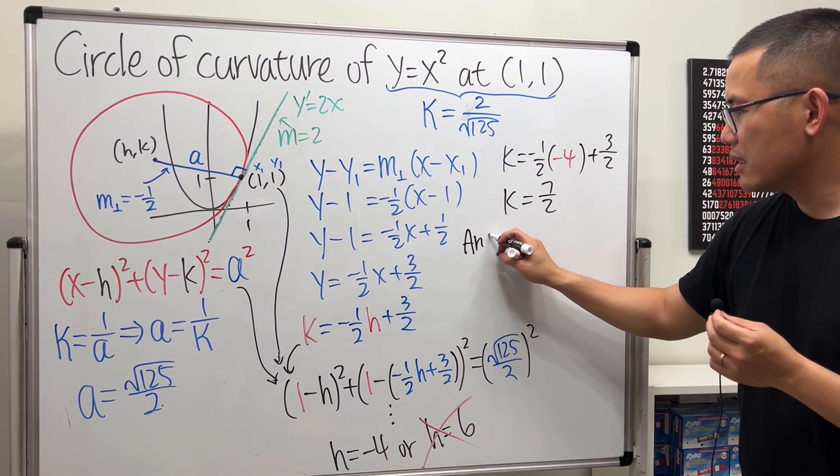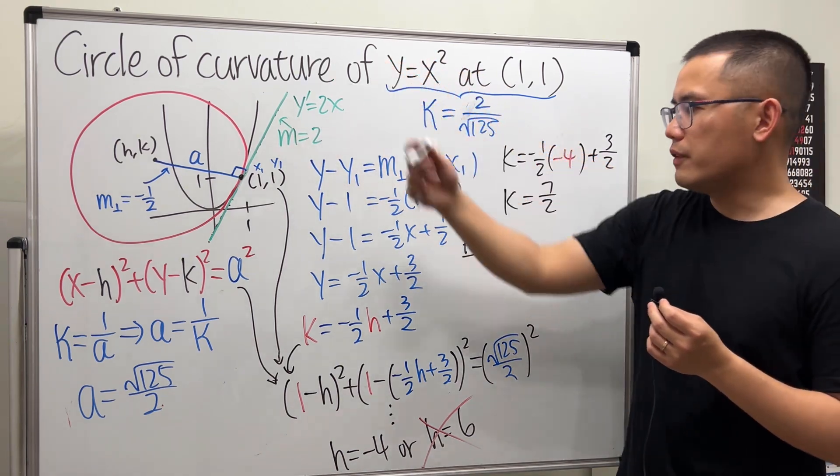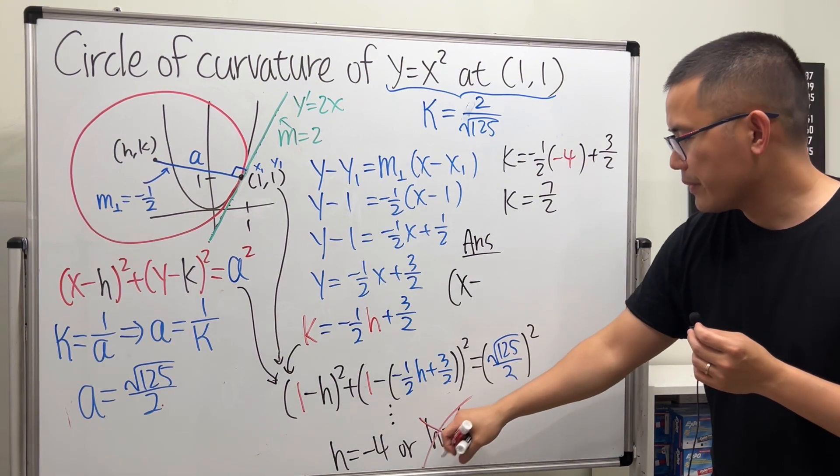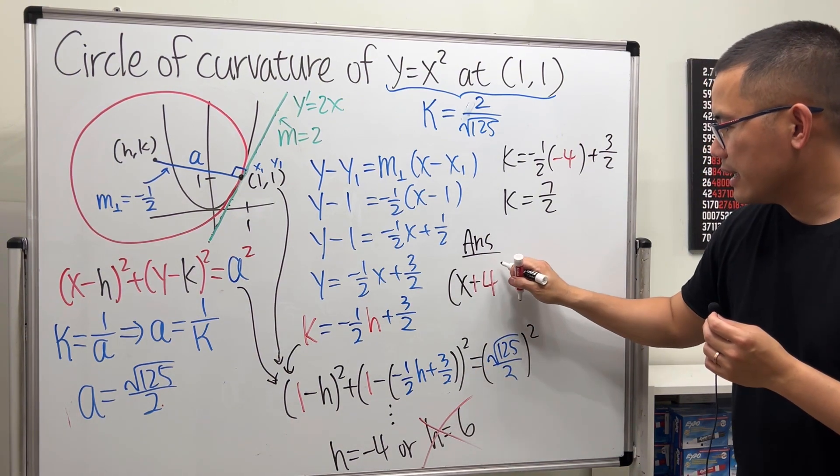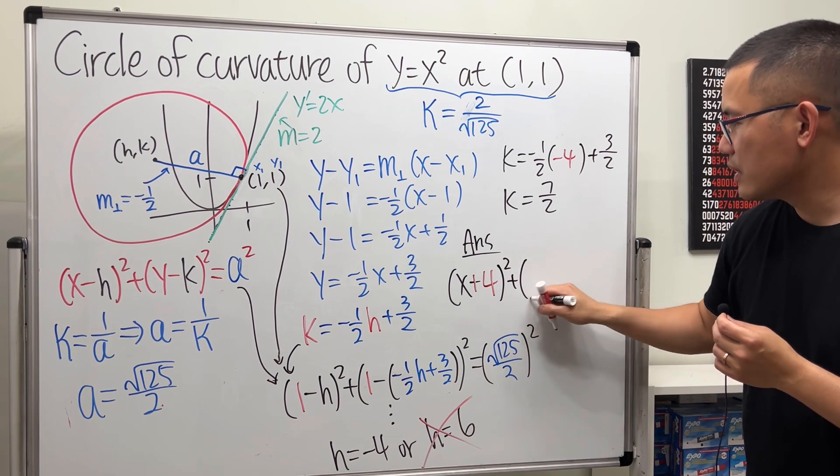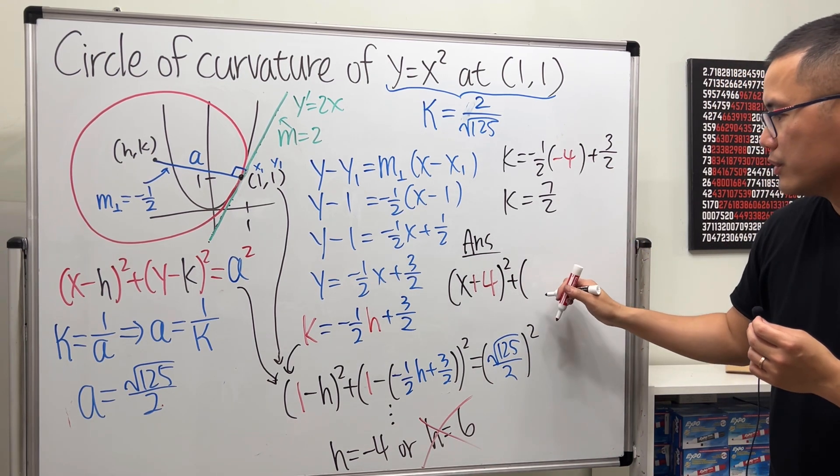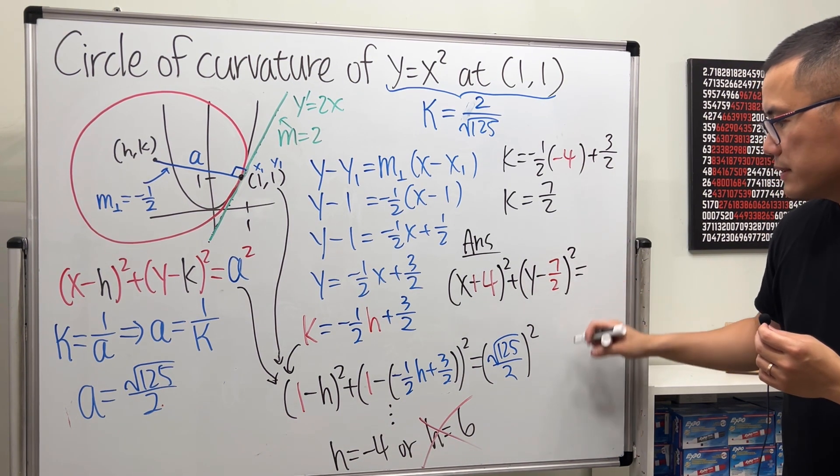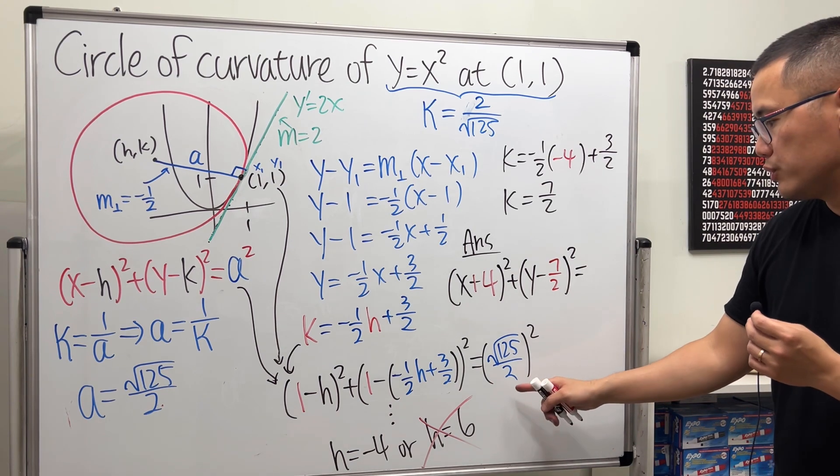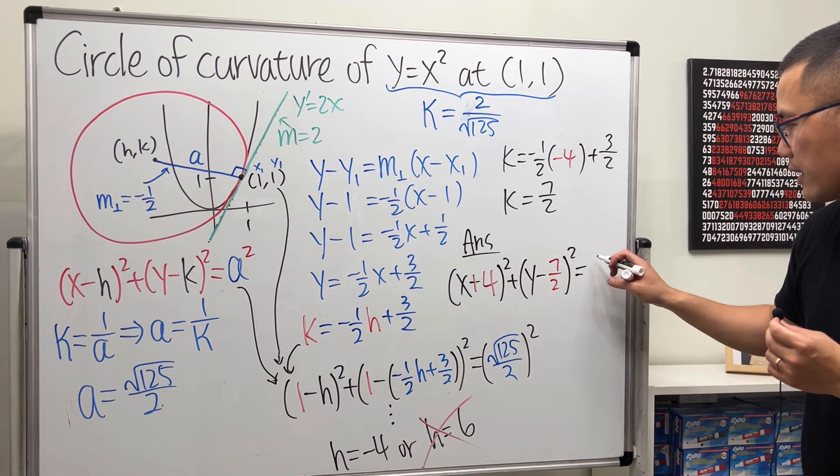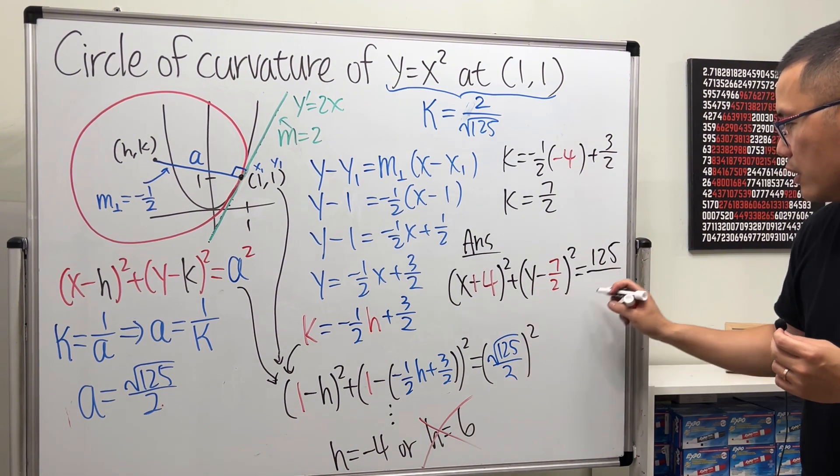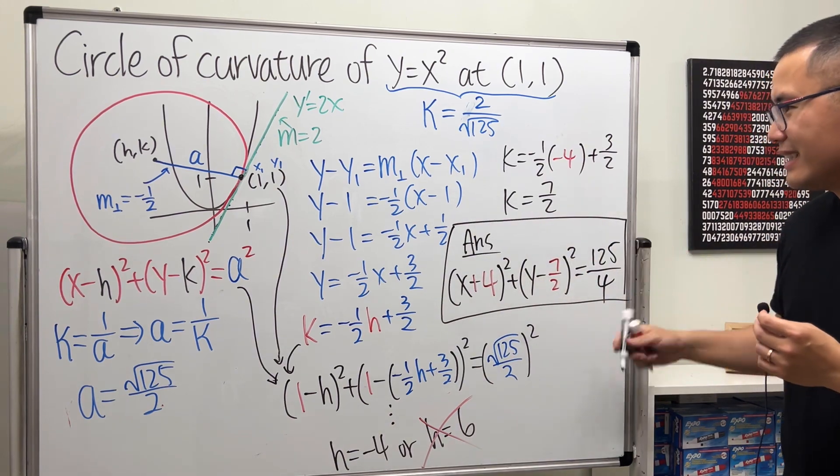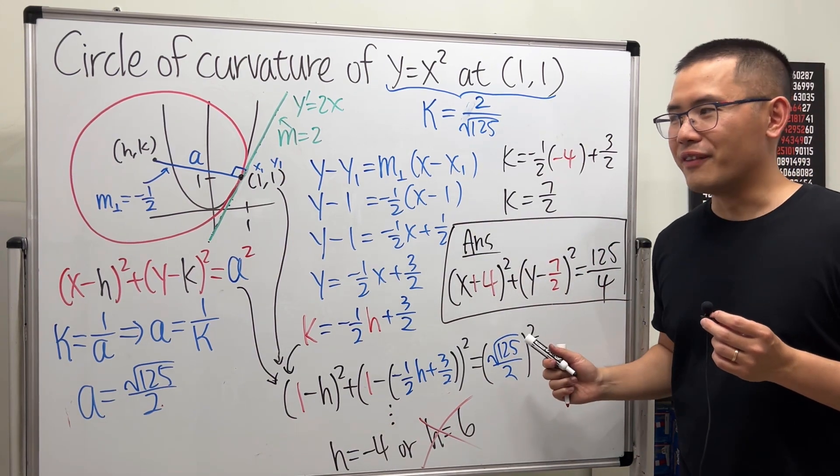So finally, the answer, the circle of curvature: x minus h is negative 4, so it becomes plus 4, square that, plus k is 7/2, so y minus 7/2, square that, equals a square, which is just this square and I'll write it down as 125 over 4. And there we have it. This is the equation for the circle of curvature for that.